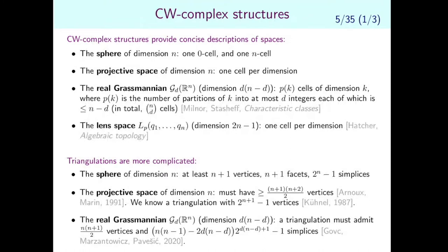What is very nice about CW complexes is that they allow us to describe spaces very concisely. The sphere can be described with only two cells — one point and one cell of top dimension — compared to triangulations which need at least n+1 vertices. Projective space is another example with one cell per dimension, whereas a triangulation of projective space needs a quadratic number of vertices, on the order of n squared. We have nice descriptions of Grassmannians and lens spaces, and many CW structures are known on manifolds.